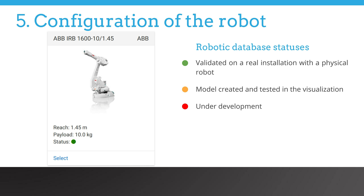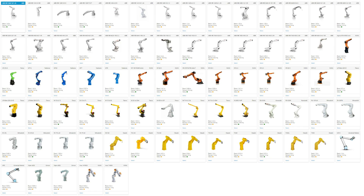Each robot will be marked by a status. A green status means that the model was validated with the real system. An orange status means that the model was validated only in the simulation environment. If you cannot find the model of the robot you would like to use, please contact us at support.photoneo.com. This page illustrates the portfolio which is available now. We focus on 6-axis manipulators, and a new model can be added upon request. The plan would be to cover models with different reach and load characteristics from each vendor.